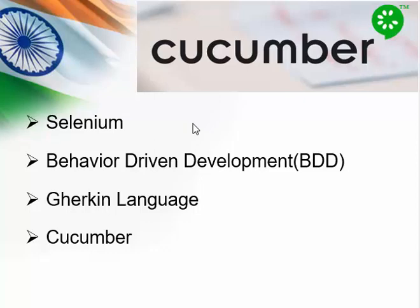In order to understand this topic, you must know about 4 things: Selenium, Behavior Driven Development (BDD), Gherkin Language, and Cucumber. In this video, I am going to give an overview, but definitely I will be posting a detailed video about each topic in the upcoming days.